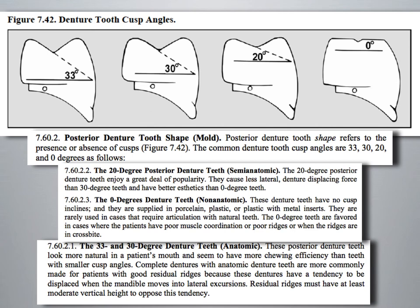The 20-degree posterior denture teeth are referred to as semi-anatomical teeth and enjoy a great deal of popularity. They cause less lateral denture displacing forces than a 30-degree tooth and have better aesthetics than a zero-degree tooth.